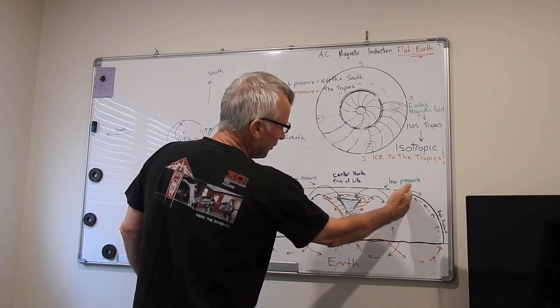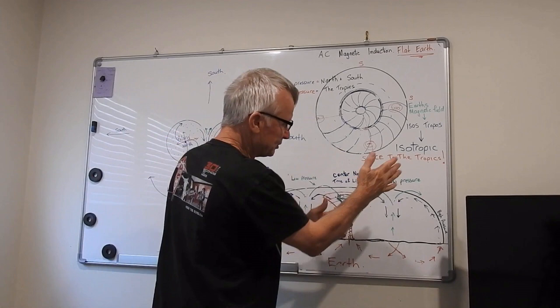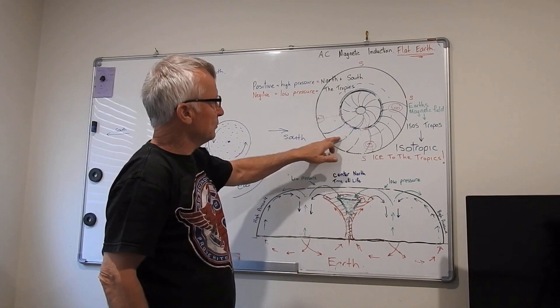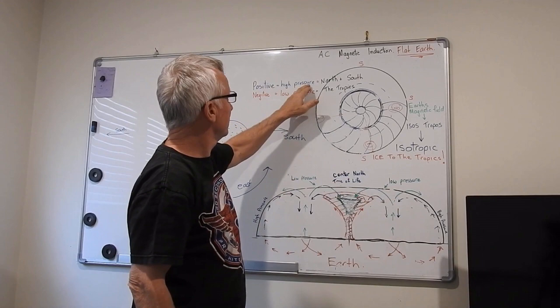Either high pressure comes down and raises up to low pressure. That's the push and the pull, drawing the field down to the earth, the magnetic field. This is the high pressure. Positive equals high pressure, north and south.